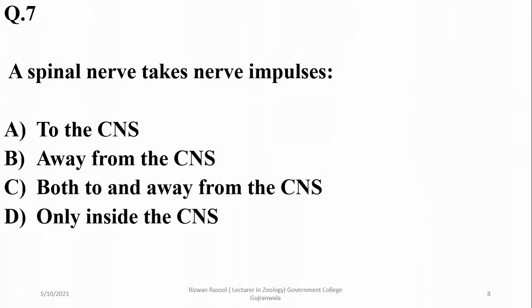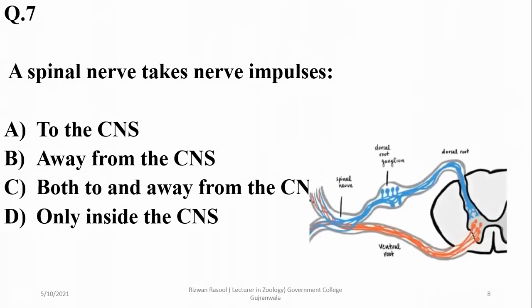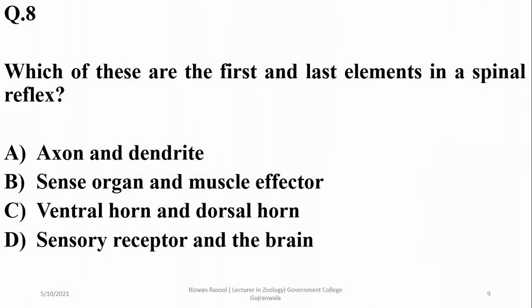A spinal nerve takes nerve impulses both to and away from the spinal cord and central nervous system because it has a mixed structure — it contains both sensory neurons and motor neurons. So the answer is charlie.